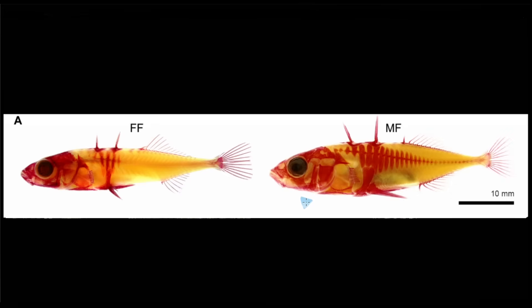These spines protect the stickleback from birds and other predators, but only if the spines are long enough to make it difficult for that specific predator to swallow them. Birds with wider throats are still able to eat even fully grown fish with fully elongated spines. Laser eyes really do seem like they would be more effective. It's almost like natural selection is just tinkering with whatever it has lying around, instead of going out and buying something new and perfectly suited to the task.